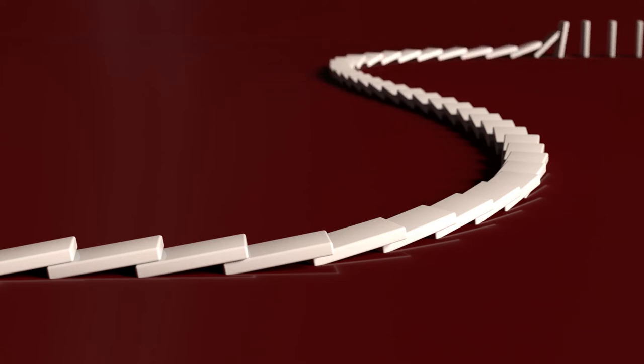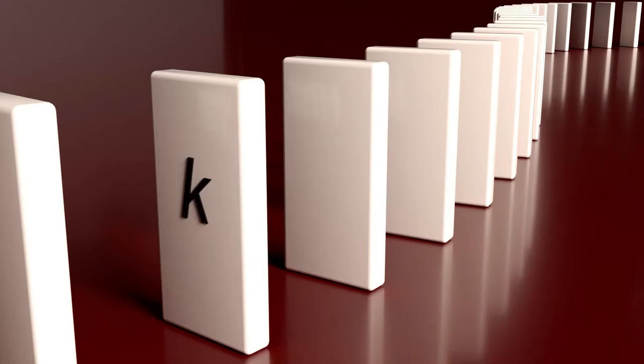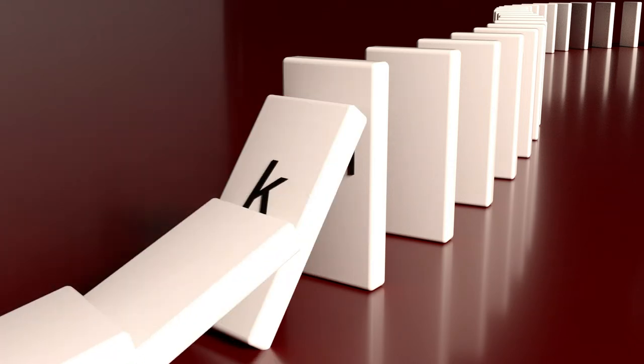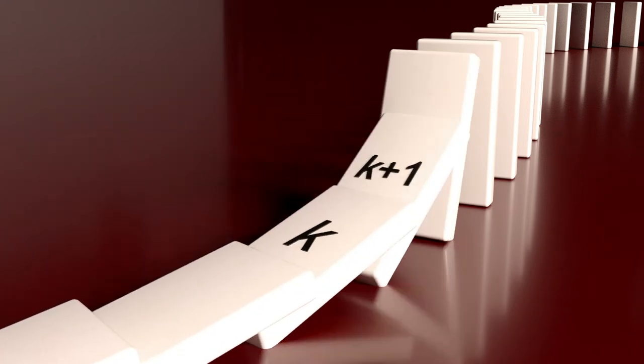Let's have a look here at domino number k. The next domino, k plus 1, has been placed at the exact right distance from domino k, so that when, or better say if, domino k falls, it will cause domino k plus 1 to fall as well.